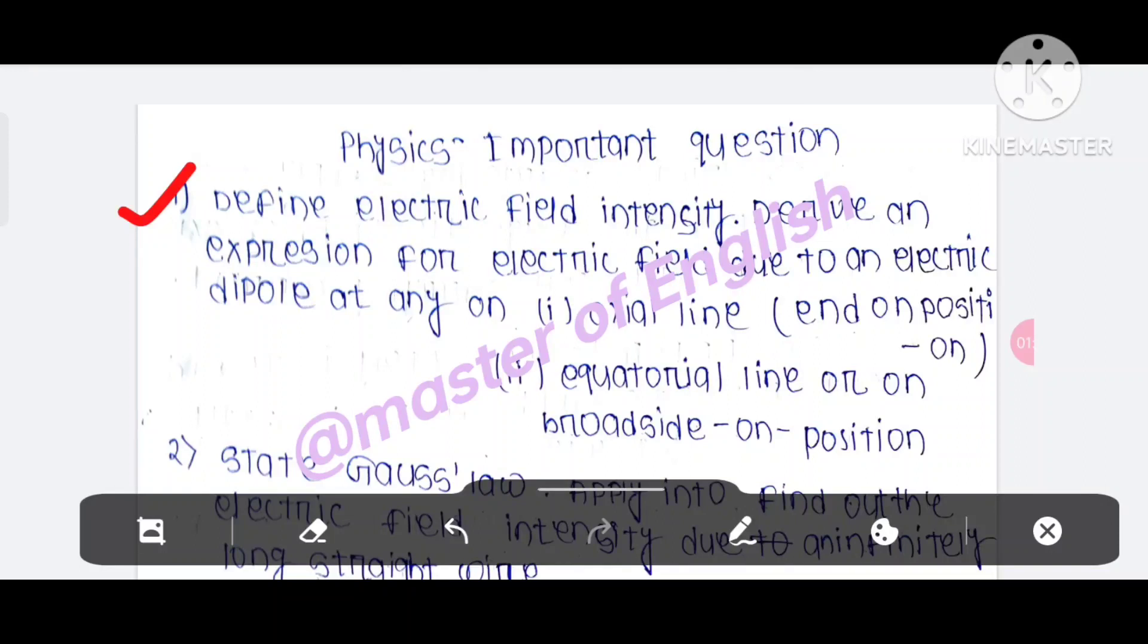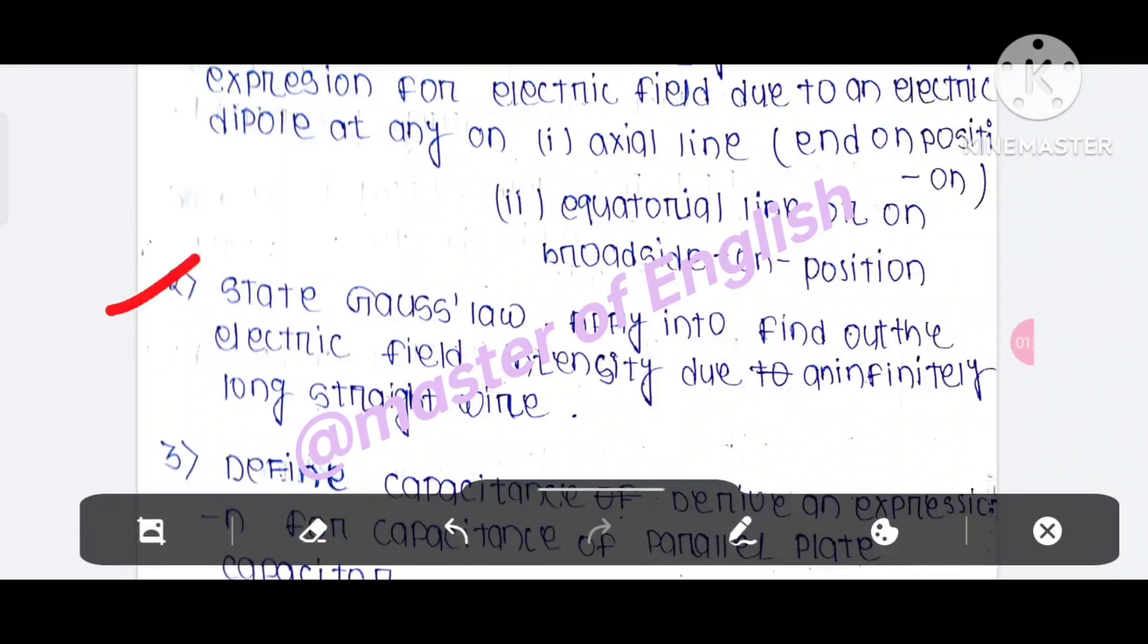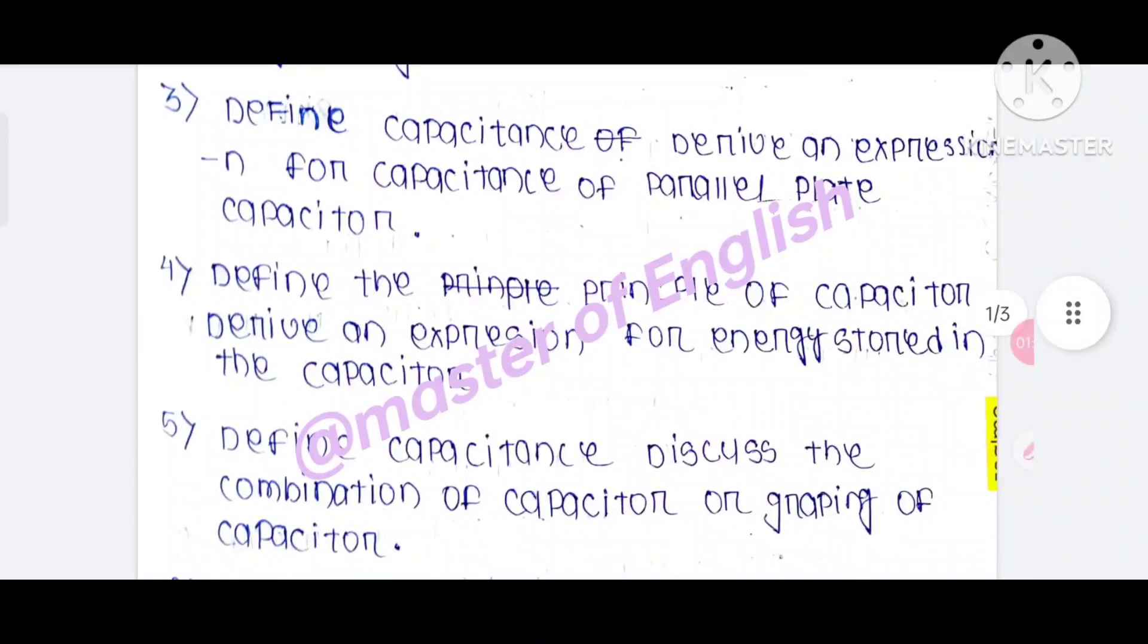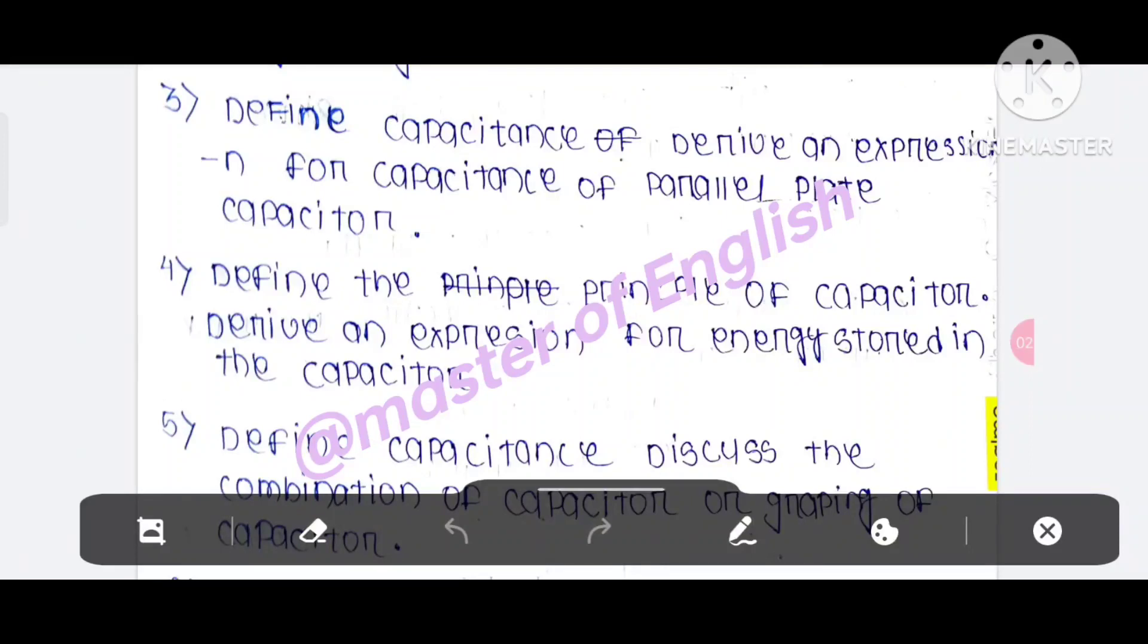At any axial line and position or equatorial line or on broadside on position. The second question is to define electric field intensity due to an infinitely long straight wire. Question 3 is to define the principle of capacitor, derive an expression for energy stored in the capacitor.